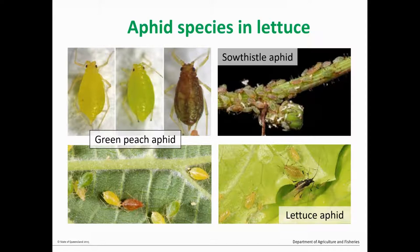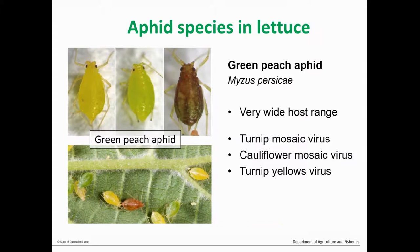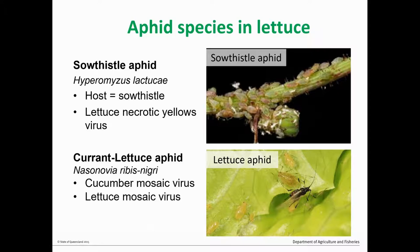There are three species of aphids that most commonly cause problems in lettuce. The main one is green peach aphid, which has a very wide host range and can transmit over a hundred different plant viruses, and it's quite variable in appearance. There's also sow thistle aphid, which doesn't breed in lettuce but transmits lettuce necrotic yellows virus, entering the crop to feed. The third is lettuce aphid, which is also a significant pest in some regions.